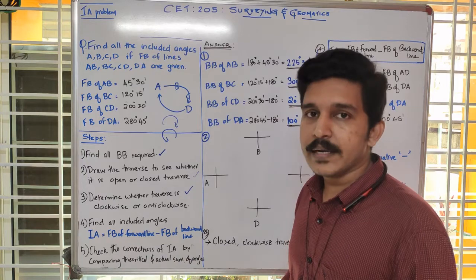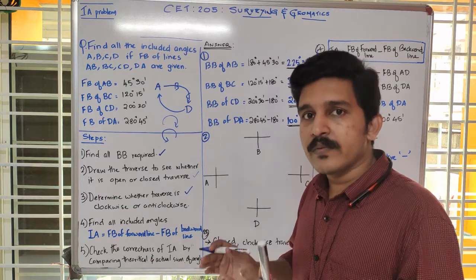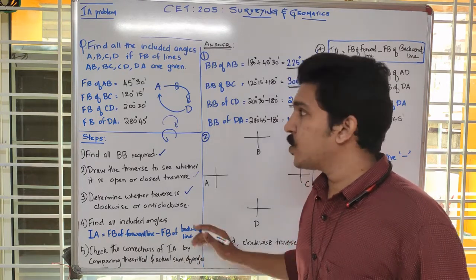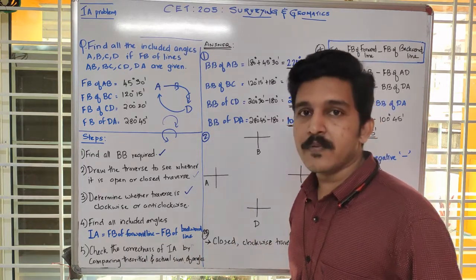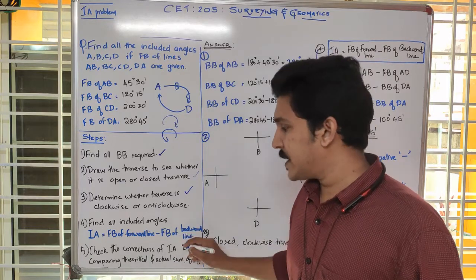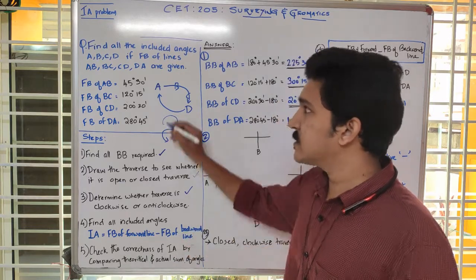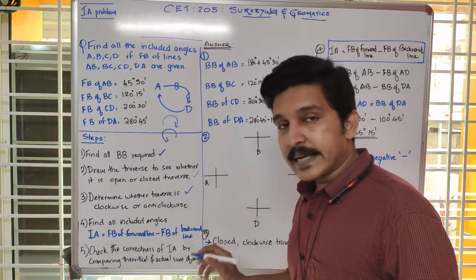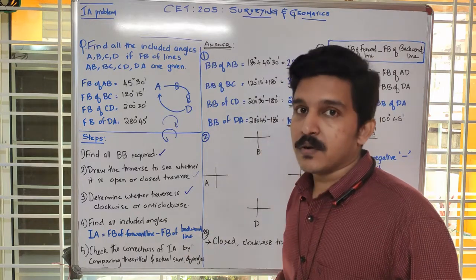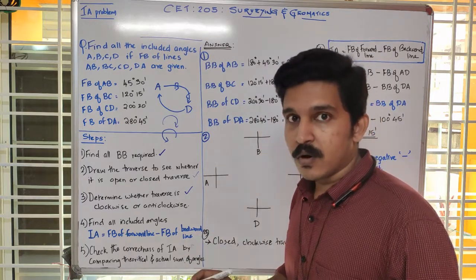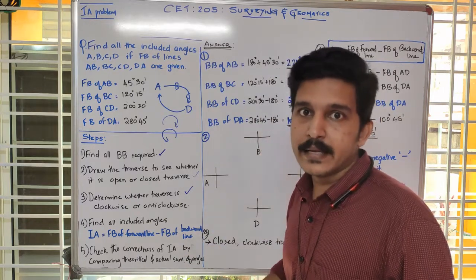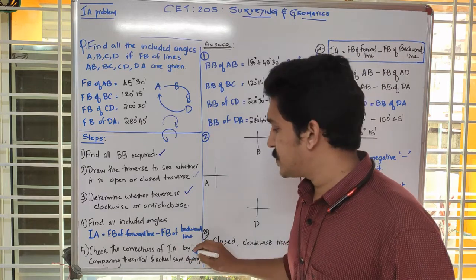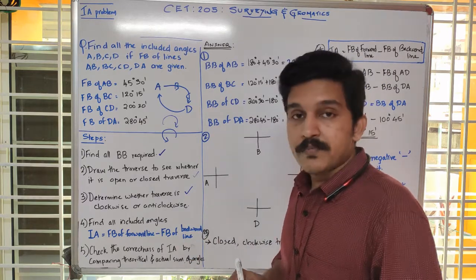The last step is to check the correctness of the included angles. After finding all the included angles, we use a check — which I will discuss later — to verify whether our answers are correct or not. If wrong, we can redo the calculations to correct them.